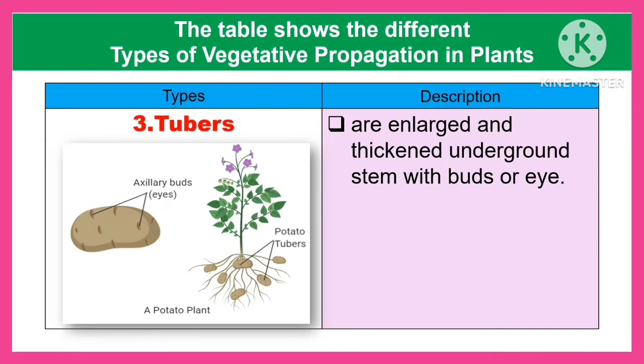The third type is the tuber. Tubers are enlarged and thickened underground stems with buds, also called eyes.